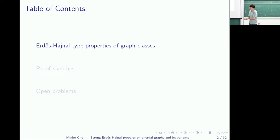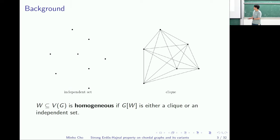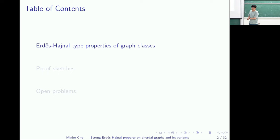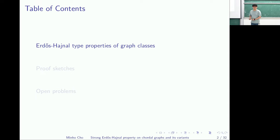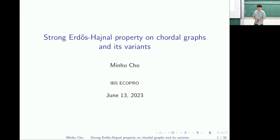This is a list of contents. I will first explain something called Erdős-Hajnal type properties, introduce our main result, and give some proof sketch. I will conclude with some open problems. By the way, this work is joint work with Andrea Sompson, Jin Hak Kim, and Mingi Kim.